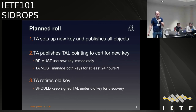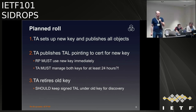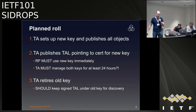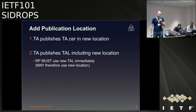For a planned roll, the current document says: set up a new key first and publish all the objects that go with it, then publish a new signed TAL object. Relying parties who see this must use it immediately. The TA must still operate the old key for at least 24 hours. The third stage is to retire the old key, but leave a pointer to where the new key is so if people arrive later they can still find their way. Adding a new publication point is relatively easy — just publish the certificate first and then you can have a trust anchor locator that references it.